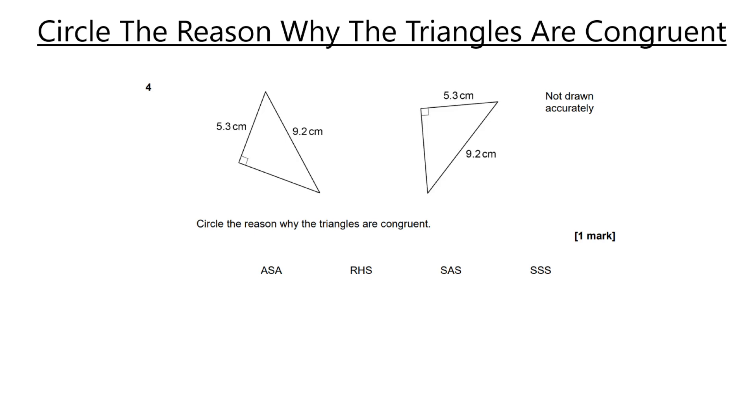So question number four, why are these triangles congruent? And they want you to circle one of the reasons why. Now these four acronyms, I guess you can call them, are rules. And you can use them to prove that a triangle is congruent.